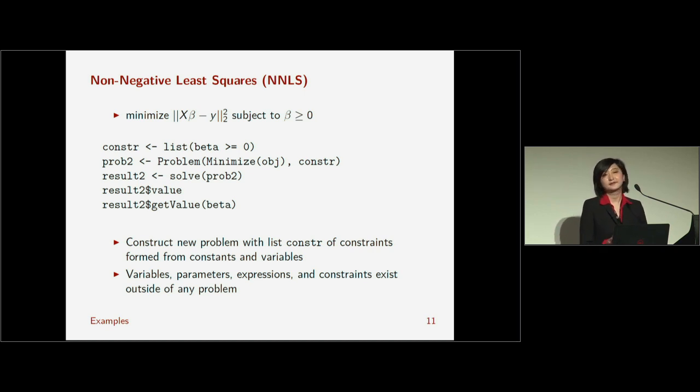Here, you've noticed I've reused my variables and expressions and constraints because they exist outside of any problem. So, you can re-solve a problem with a different objective, same objective with different constraints, or same constraints with different objective. You can create a regularizer function, and then do minimize parentheses objective plus regularizer. It's very flexible as a DSL.